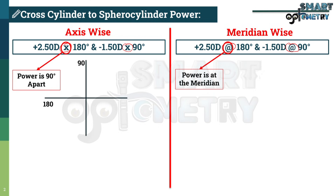If we distribute this axis-wise power into an optical cross, the first component is plus 2.5 at 180 degree axis. Since power is present 90 degrees apart, the power will be at 90 degrees, so here it will be plus 2.5. And minus 1.5 at 90 degree axis means the power will be at 180 degrees, so minus 1.5 goes here at 180 degrees.